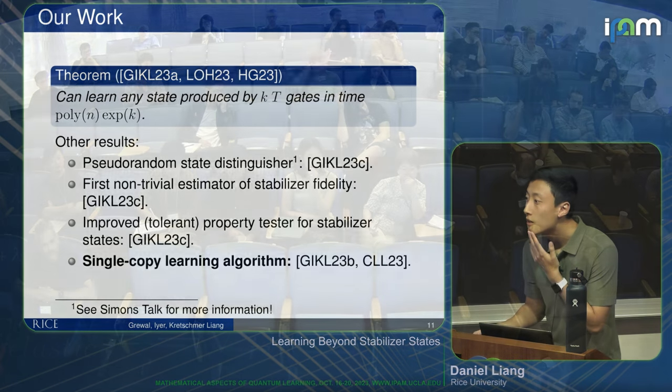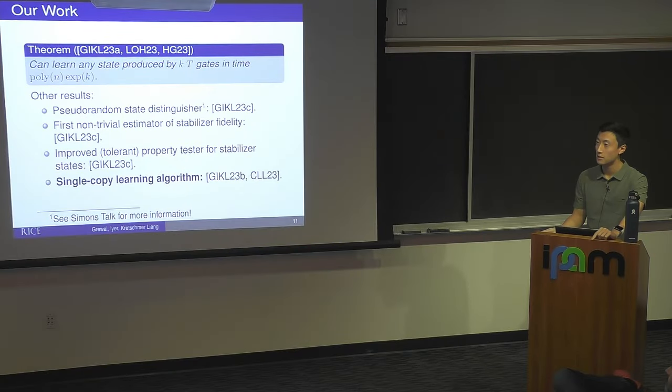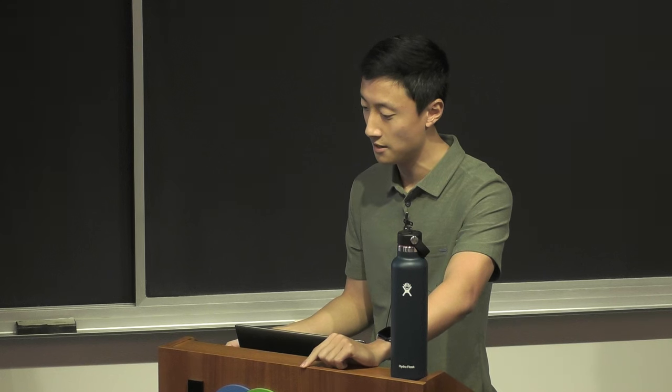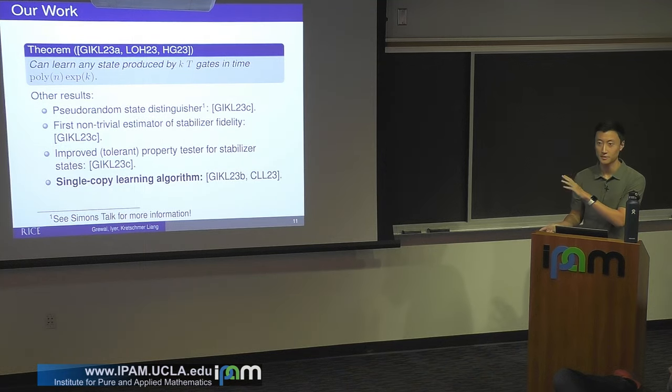Regarding the separation between single-copy and multi-copy: in the multi-copy case, we use linear samples and n-cubed time. In the single-copy case, you can do it in n-cubed samples and n-to-the-fifth time, or use an extra round of adaptivity to bring it to n-to-the-fourth time.